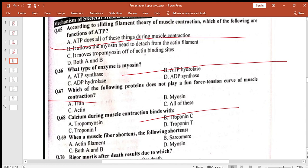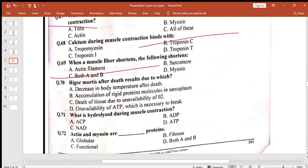When a muscle fiber shortens, the following shortens: actin filament or sarcomere? Both. Rigor mortis death results due to which? Actin filament ATP humare pas nahi hoti. What is hydrolyzed during muscle contraction? ATP humare pas hydrolyze hota.